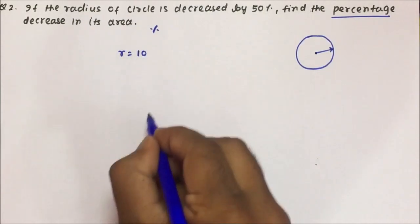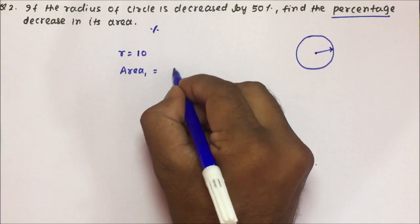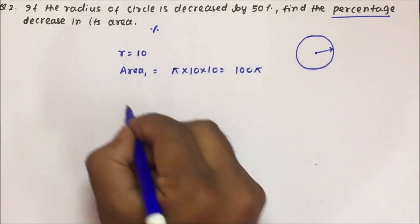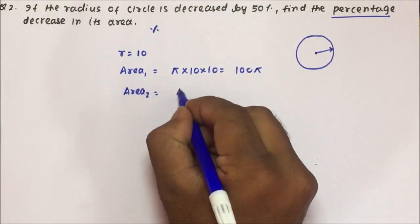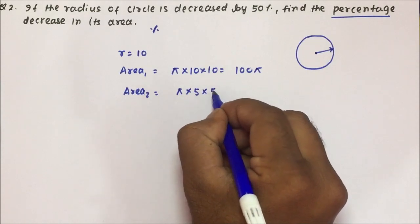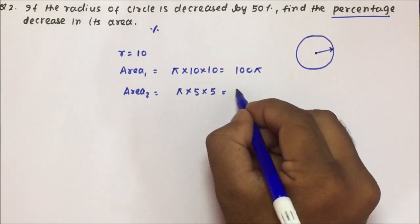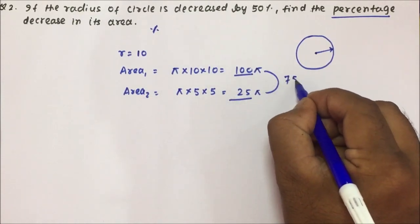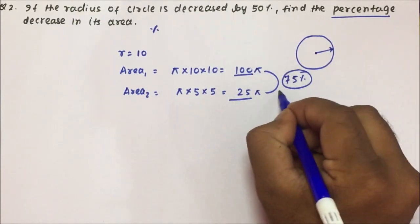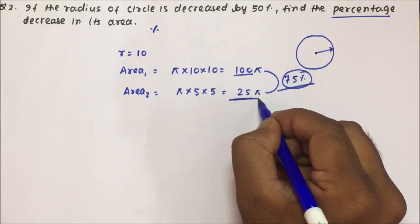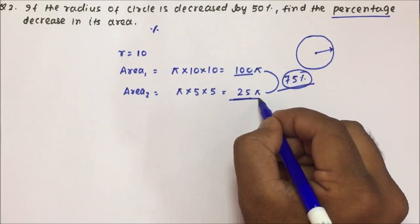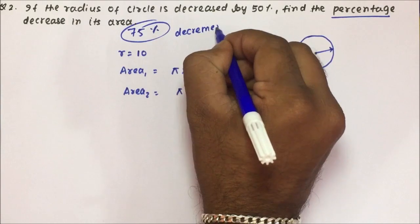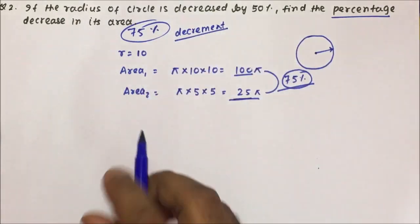Assume the radius was 10. The original area is π × 10 × 10 = 100π. After a 50% decrease, the new radius is 5, so the new area is π × 5 × 5 = 25π. The reduction from 100π to 25π means the area decreased by 75 percent.